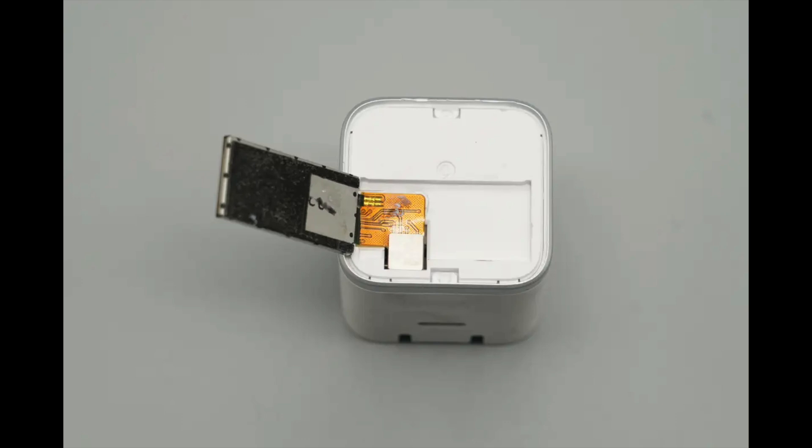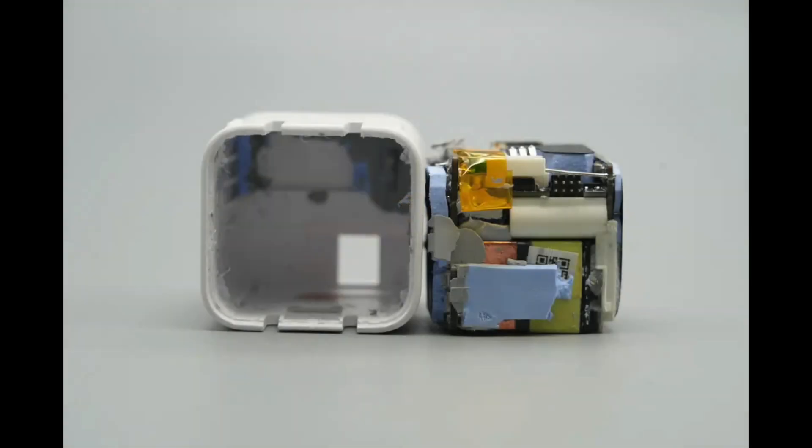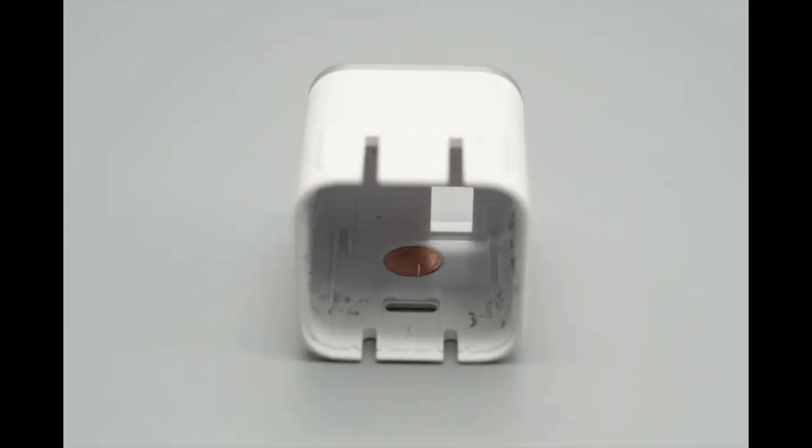After removing the top black panel, it was found that the display is connected to the PCBA module via a flexible ribbon cable. Remove the PCBA module. The inner side of the casing has copper foil applied in the area corresponding to the touch button.